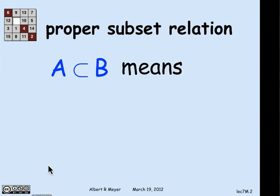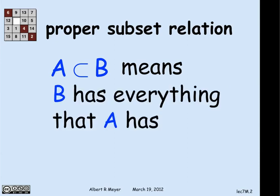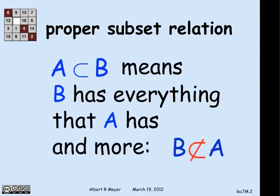Let's look at that example. I'm interested in the proper subset relation. A is a proper subset of B, which, if you remember, means that B has everything in it that A has and something extra. So in particular, since B has something extra, B is not a subset of A, certainly not a proper subset of A.